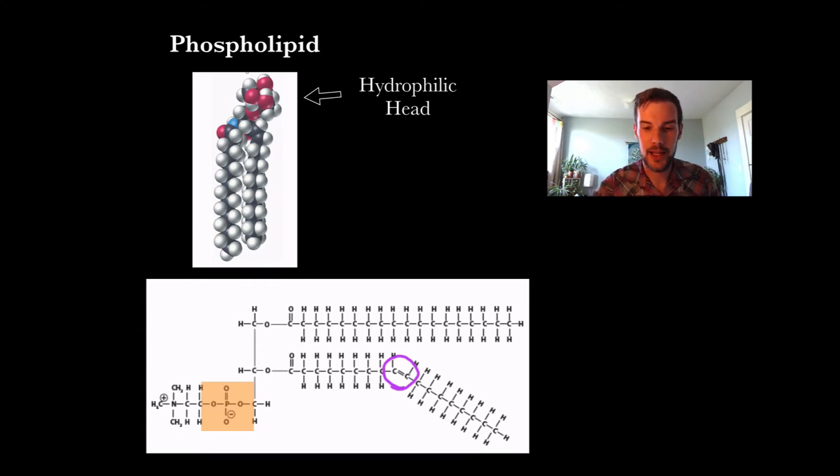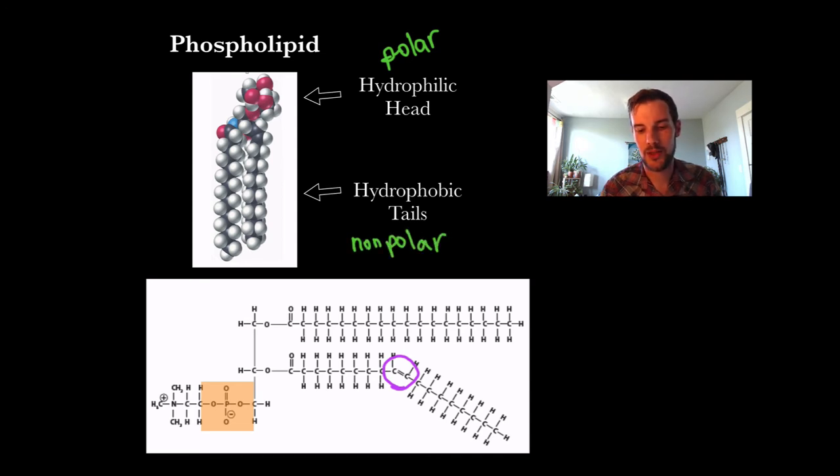It's going to have a hydrophilic head, so a polar head which means it's going to want to go towards water or be attracted towards water. It's going to have a hydrophobic tail which means it's going to be nonpolar, so it is going to move away from water. Oils generally are nonpolar which means oil and water are not going to mix, but if it does have a polar region that means that region of the molecule is going to be near the water or closer to the water.